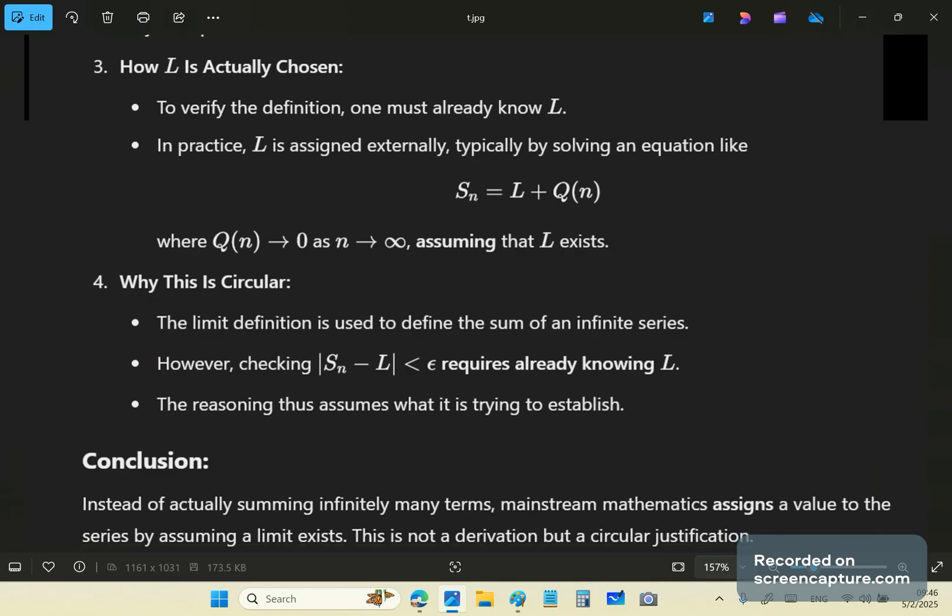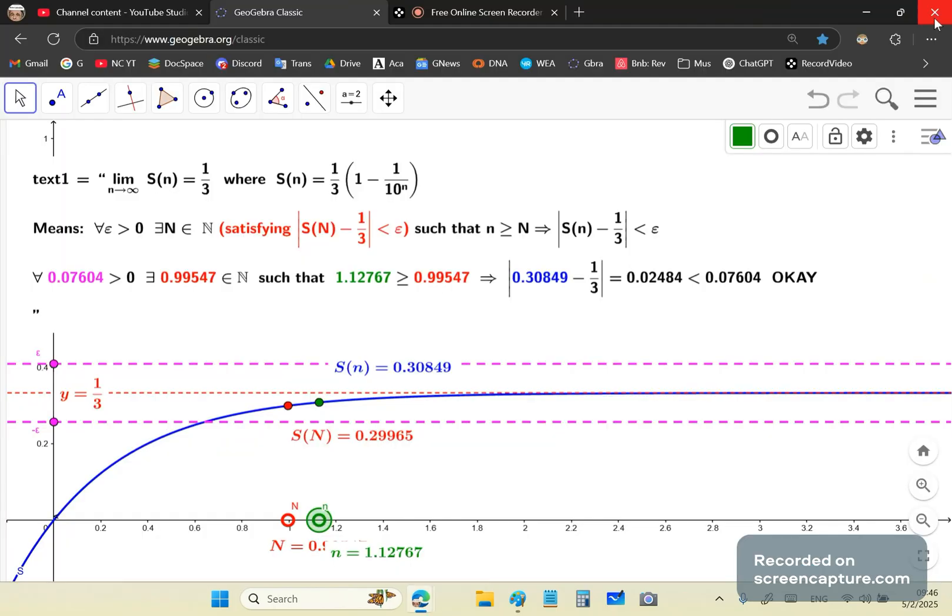So instead of actually summing infinitely many terms mainstream mathematics assigns a value to the series by assuming a limit exists. This is not a derivation but a circular justification. So that's pretty much it.